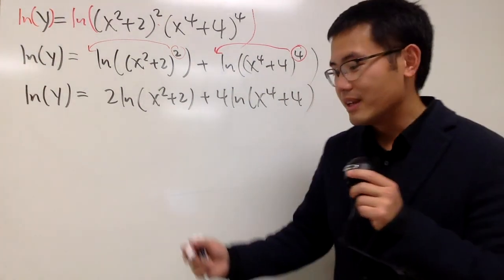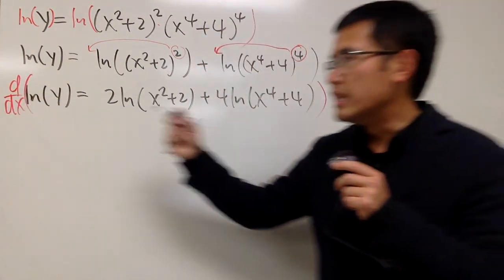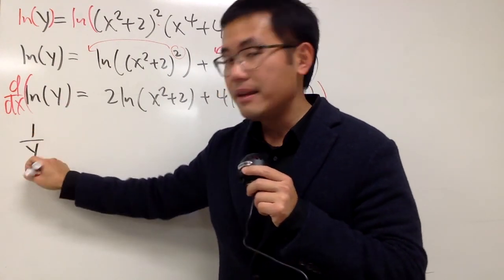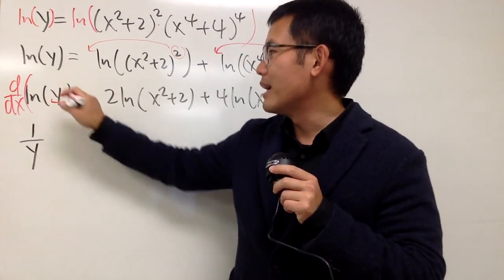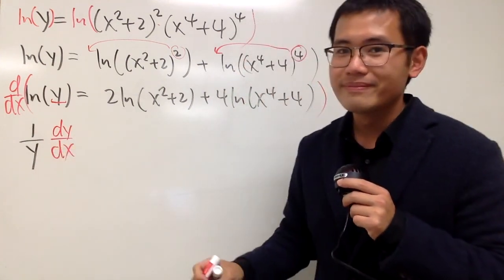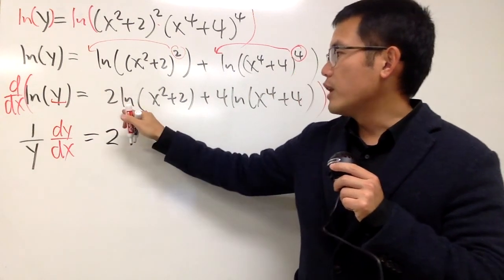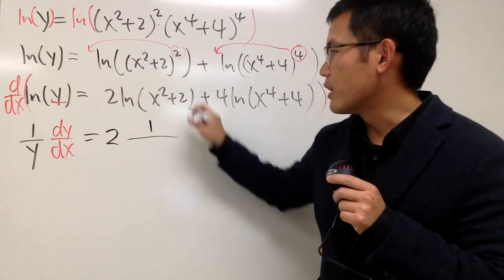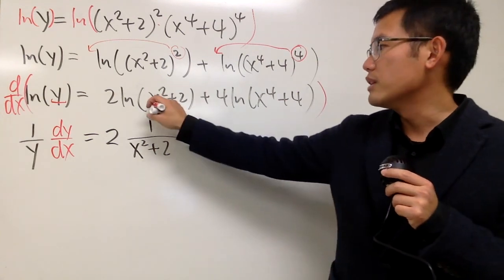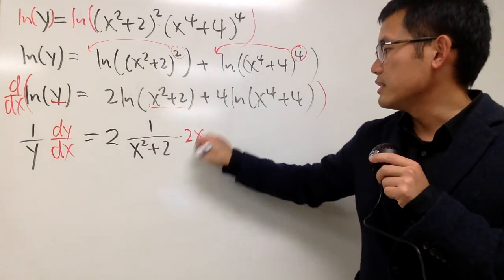Now we will take the derivative. I'll write d/dx to mean we differentiate the whole thing. On the left hand side, differentiating ln y gives us 1 over y — and don't forget the chain rule — multiplied by the derivative of y with respect to x, which is exactly the dy/dx we are looking for. On the right hand side, this is a constant multiple, so I'll keep that. Differentiating ln of something gives 1 over that something, so we get 1 over x squared plus 2 in the denominator. Don't forget the chain rule again: multiply by the derivative of x squared plus 2, which is 2x.